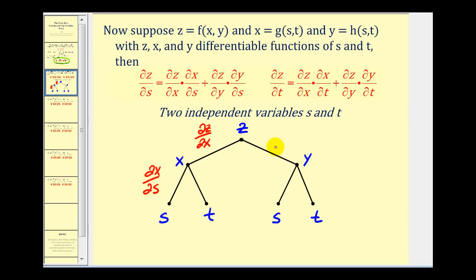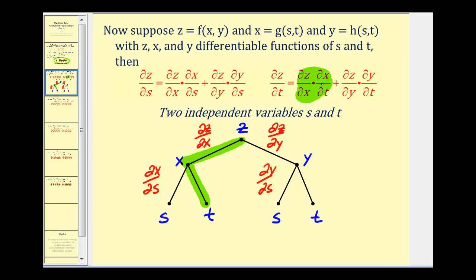There's also a path to s to the right. The first path leads from z to y, which represents the partial of z with respect to y, and then from y to s, that would be the partial of y with respect to s. To determine the partial derivative of z with respect to t, we follow the left branch from z to x and then x to t — this would be the first half of the chain rule. On the right, we go from z to y and then y to t, which represents the second half of the chain rule.